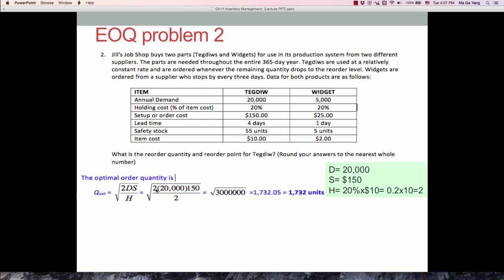The square root is 2 times 20,000 times 150 divided by 2, because holding cost is 20% times $10. So 0.2 times $10 is 2. Then we can have 1732.05. When you round down, this is 1,732 units. That is your EOQ.